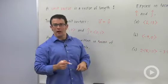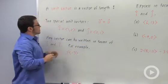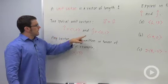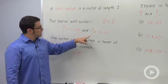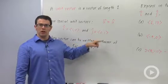So here are two special unit vectors, i hat and j hat. i hat has components 1 comma 0, and j hat has components 0 comma 1.